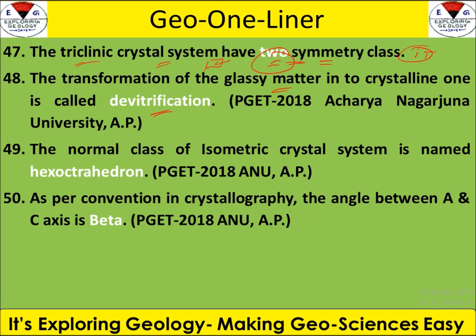De-vitrification is when glassy matter changes into crystalline matter. Vitrification refers to glassy, so de-vitrification means crystalline matter forming from glassy matter. The normal class of the isometric system is called hexa-octahedron, which has the maximum number of symmetry elements.